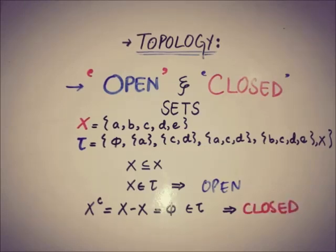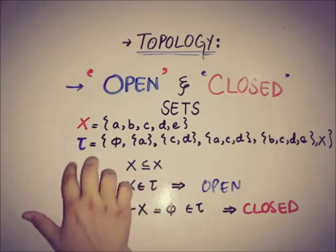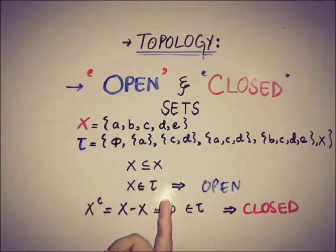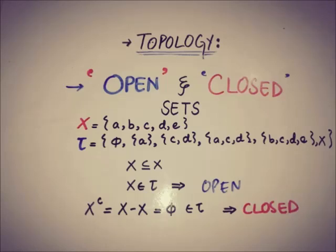The same case applies to the empty set. The empty set is a subset of x and a member of the topology, which means the empty set is an open set. Taking the complement of the empty set gives x, which belongs to the topology, so the empty set is also a closed set. You can pick any random subset from x to check whether it is a closed set or an open set.